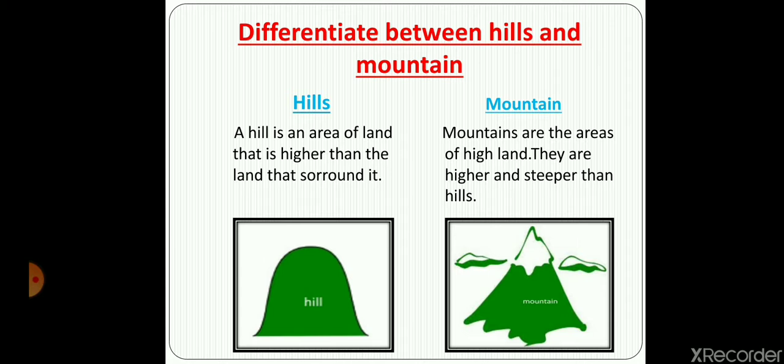Differentiate between hills and mountains. Look at the picture of a hill. A hill is a piece of land that rises higher than everything surrounding it. Hills are easier to climb than mountains. A hill is usually below 2000 feet or 600 meters.